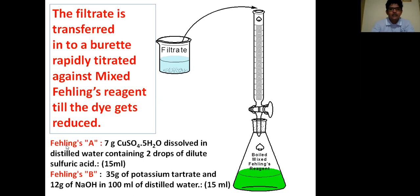Here is how to prepare mixed Fehling reagent. Fehling A solution: take 7 grams copper sulfate pentahydrate dissolved in distilled water containing 2 drops of dilute sulfuric acid to make 50 ml. Fehling B: 35 grams potassium tartrate and 12 grams NaOH in 100 ml distilled water, use 15 ml. Mix Fehling A and Fehling B to form mixed Fehling reagent and take this solution under boiled condition for titration.